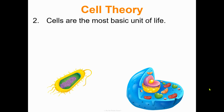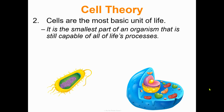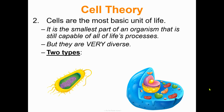Part two of the cell theory is that cells are the most basic unit of life. It is the smallest part of an organism that is still capable of all of life's processes. But they are very diverse. There are two main types of cells: prokaryotic cells and eukaryotic cells.